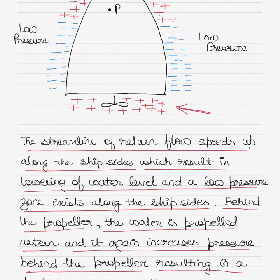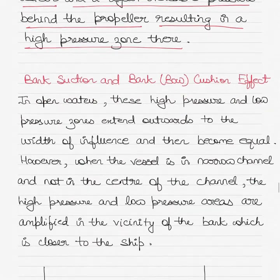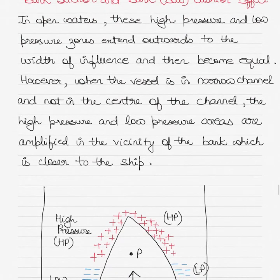Here is the zone behind the propeller where a high pressure zone exists, and the same high pressure zone exists towards the forward part of the hull. Along the ship sides there is a low pressure zone. Now these concepts will be used in explaining how the vessel experiences the concepts of what you call is a bank suction or a bow cushion effect.